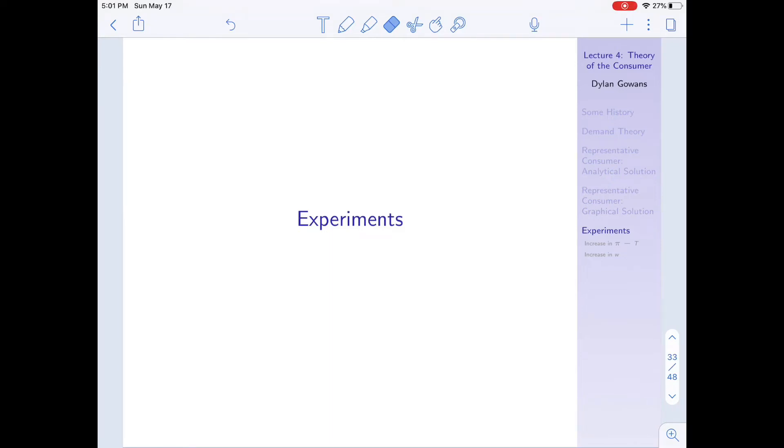This brings us to the next section where we're going to do what economists call experiments. Now these aren't real experiments in the scientific sense. What they are is we're going to say in our model, if we accept that our model is true, what happens if we make a few changes? What happens if I change certain variables and what effects does it have on other variables? And in that way we hope to learn more about the real world.